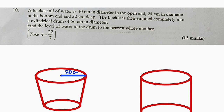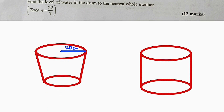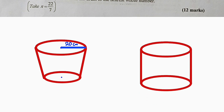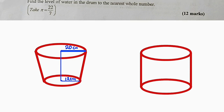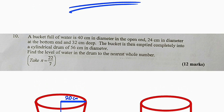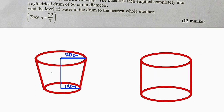And at the bottom, the diameter is 24 cm. Half of 24 gives us the radius, which is 12 cm. So from the center to the circumference at the bottom, we have 12 cm. We can connect these to obtain the height, and the height is given as 32 cm.